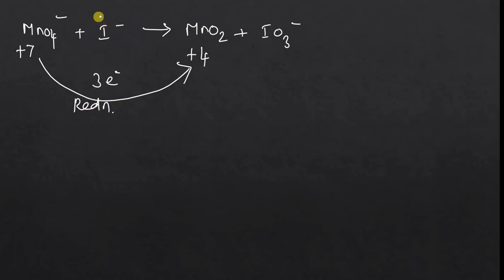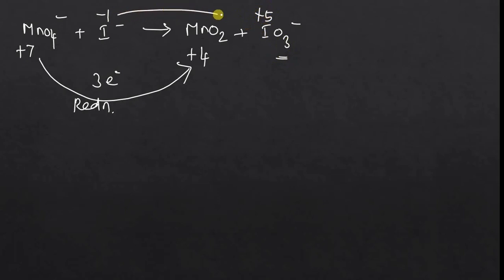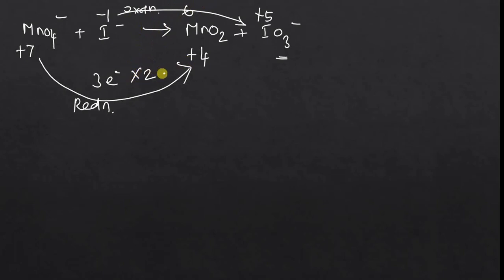Here in I⁻, iodine is in the −1 oxidation state. In IO3⁻, iodine is in the +5 oxidation state. So from −1 to +5, the oxidation number increases — this is the oxidation reaction, and the number of electrons involved is 6. First of all, we have to balance the number of electrons.